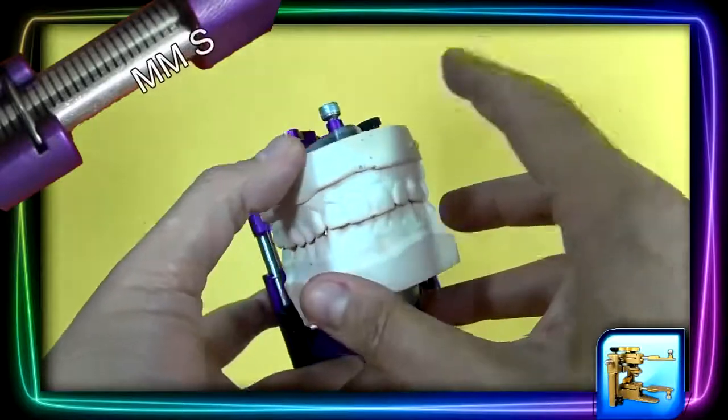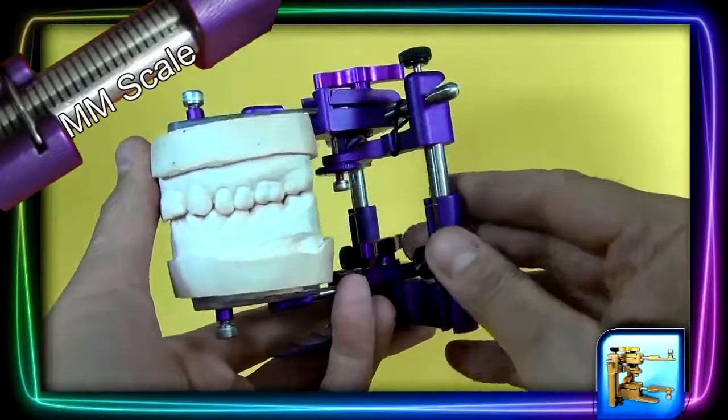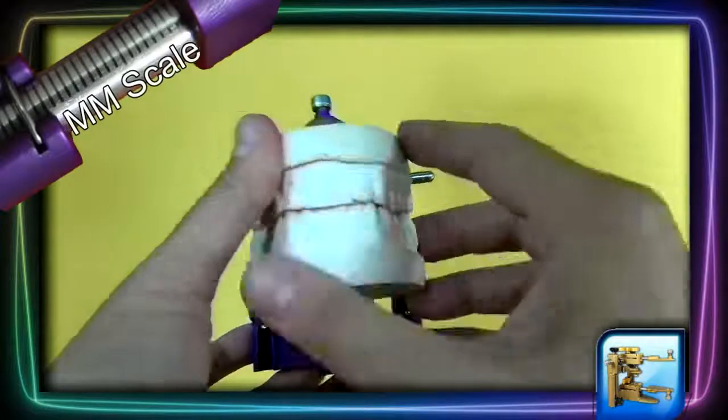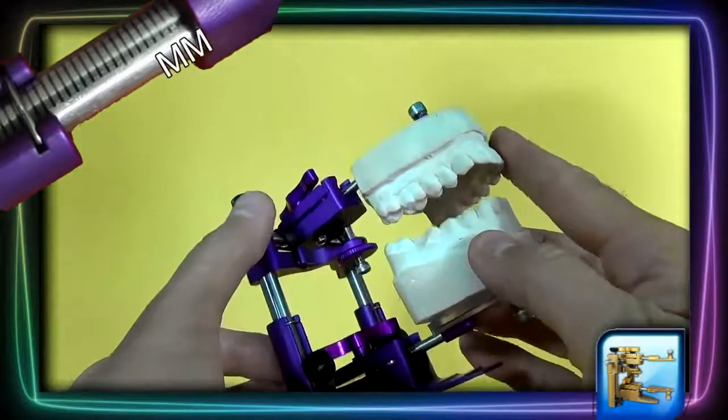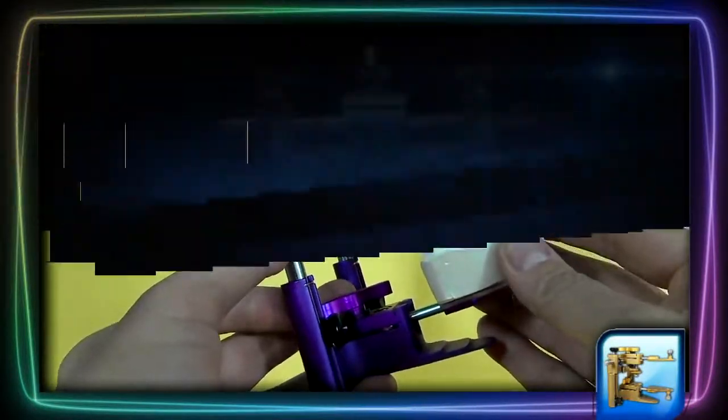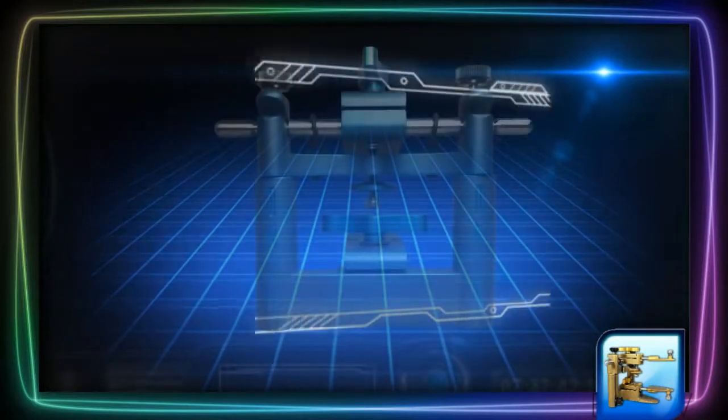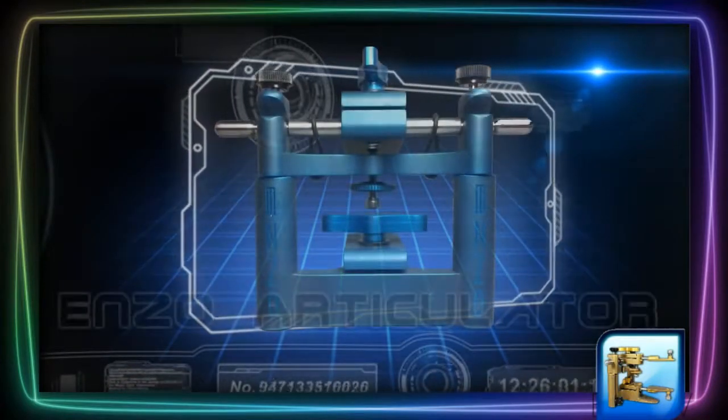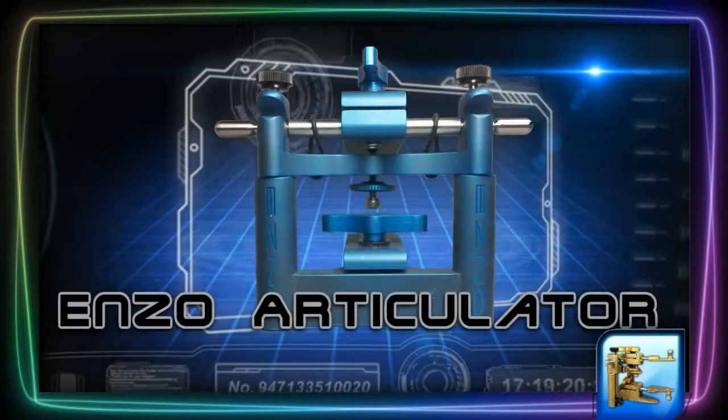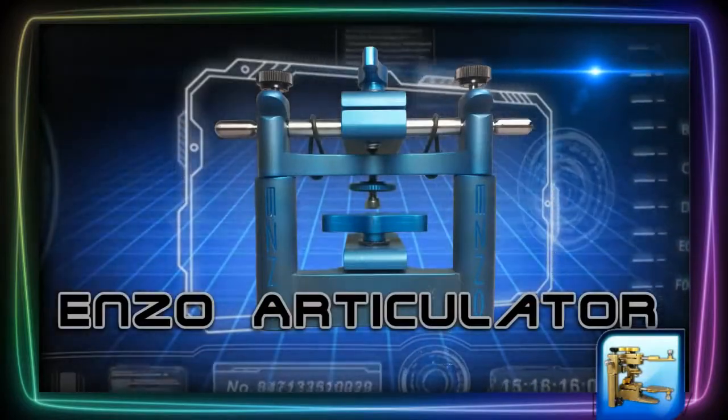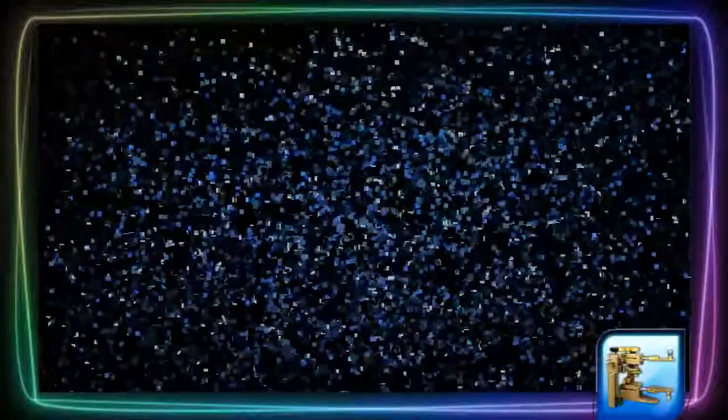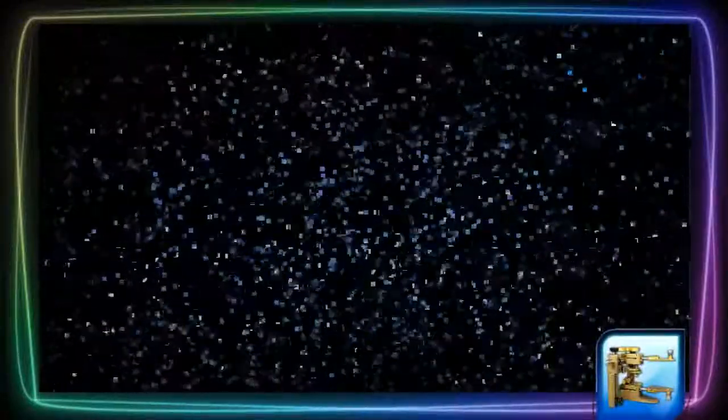Another nice feature of this articulator is the millimeter scale on the vertical rod. And we're done. As you can see, it's pretty simple. It takes seconds and is extremely accurate.